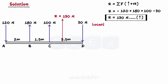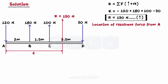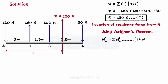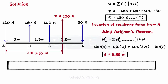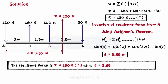Then, we have to find the location of resultant from point A. Let us assume that the resultant R is at a distance D to the right of point A. By applying Varignon's theorem, we can find this value of D. On calculating, we find D is equal to 3.85 meters. Hence, the resultant force of magnitude 130 N acts at a distance of 3.85 meters to the right of point A.